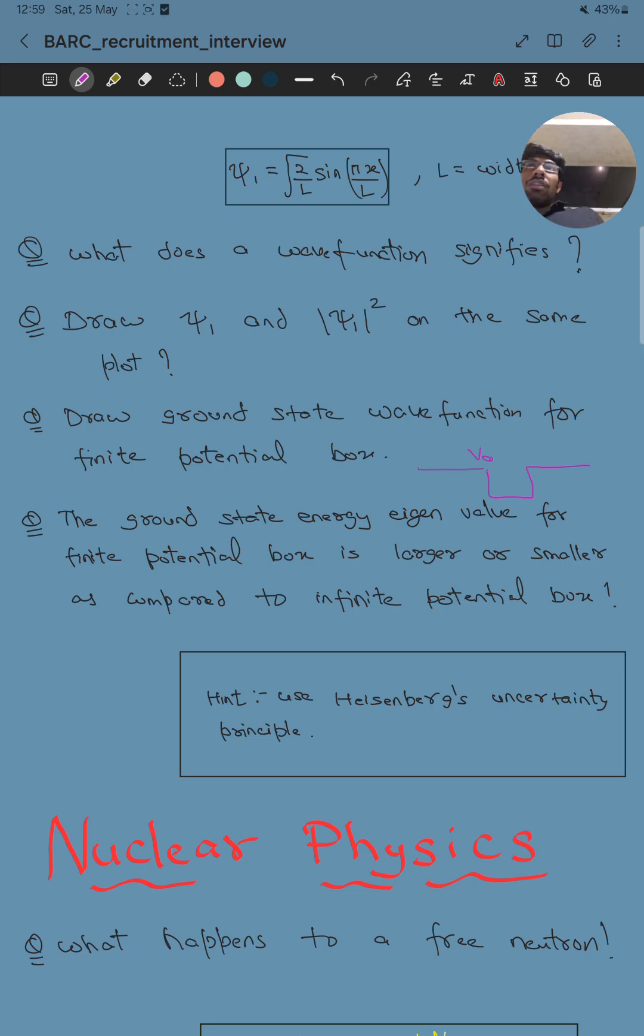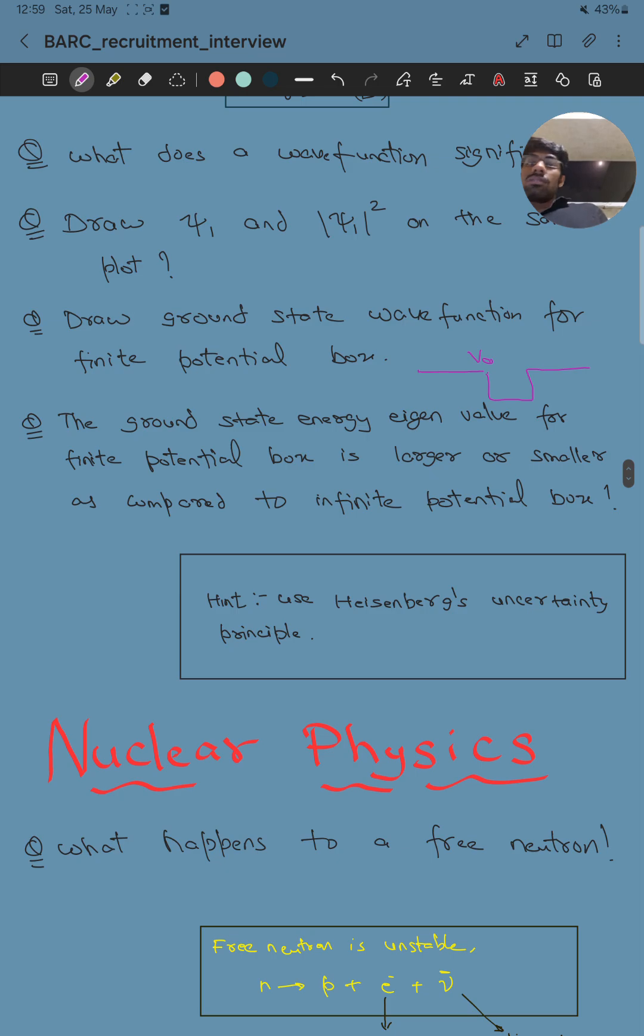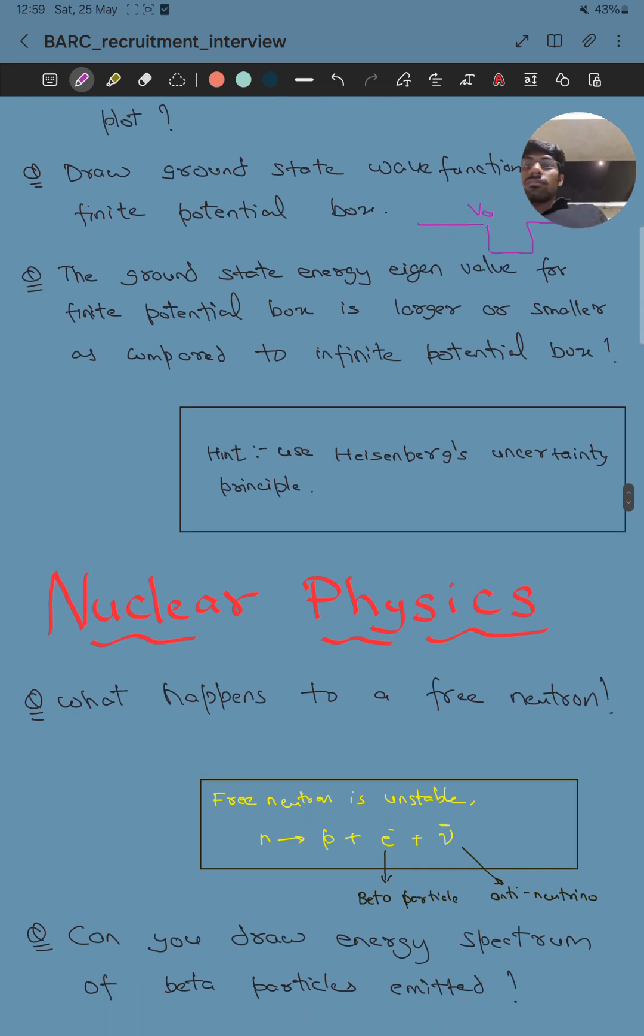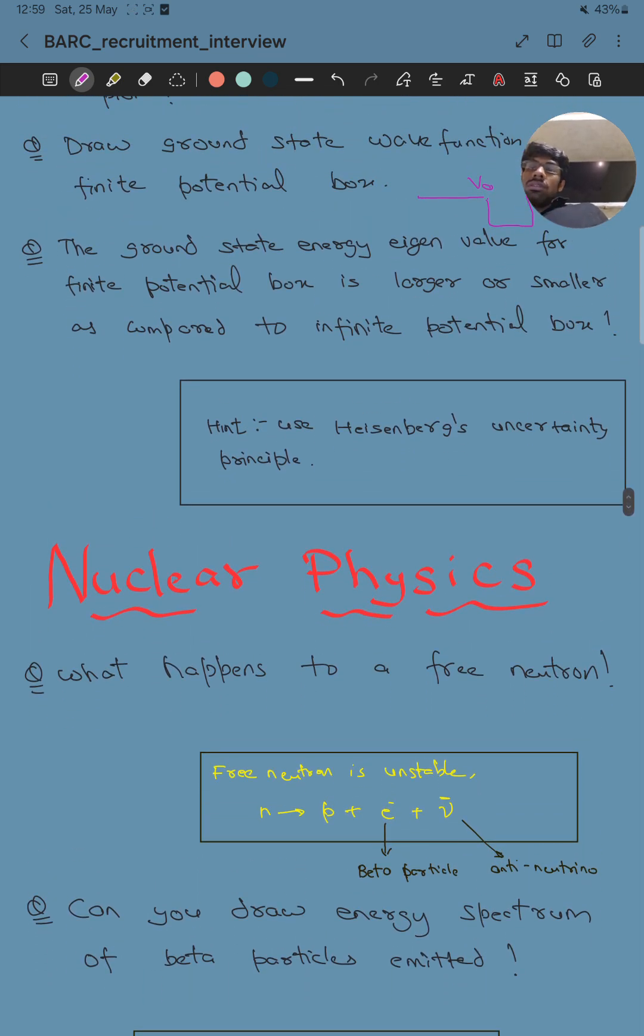Is the ground state energy eigenvalue for the finite potential box larger or smaller compared to the infinite potential box? I was stuck at that point and they gave me a hint. He told me to use Heisenberg uncertainty principle. Sometimes they will help you if you are struggling with a question. The committee is somewhat helpful, so they helped me find the answer.